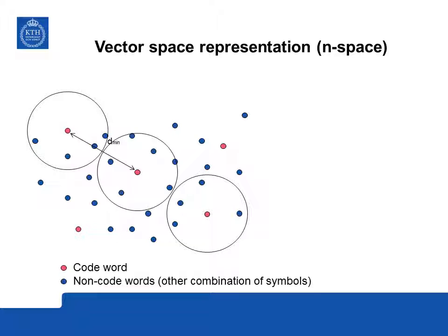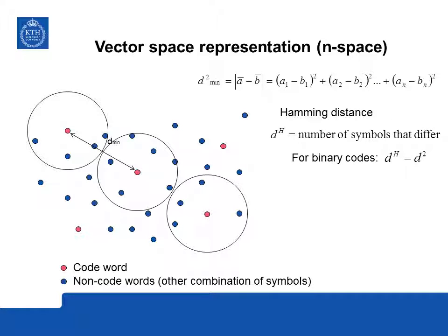In the graph, the minimum distance D_min is the minimum number of errors needed to go from one correct codeword to another. As long as fewer than D_min errors occur, we will always be able to detect an erroneous message. The Hamming distance is the number of symbols that differ, and for binary codes the Hamming distance equals the squared Euclidean distance.